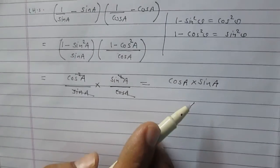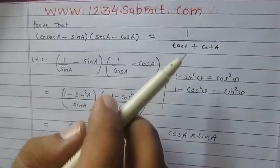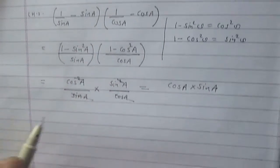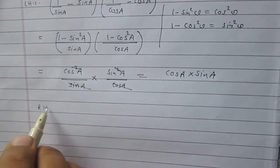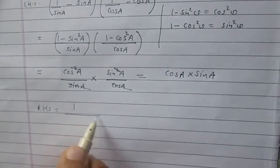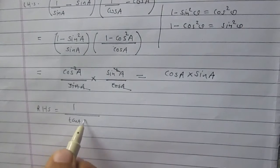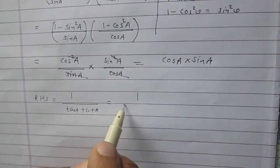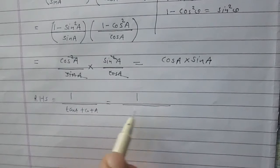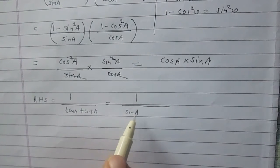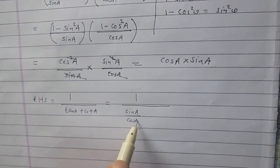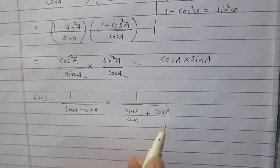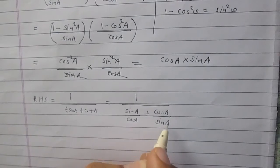Now consider the right hand side. The right hand side is 1 upon tan A plus cot A. We know that tan A is nothing but sin A upon cos A, and cot A can be written as cos A upon sin A.